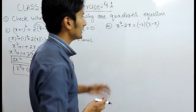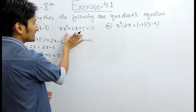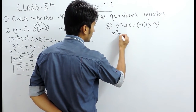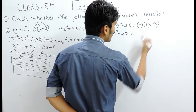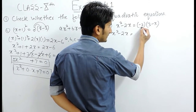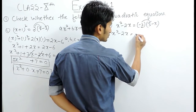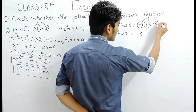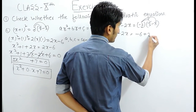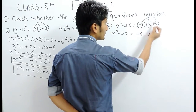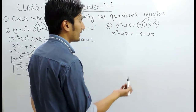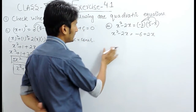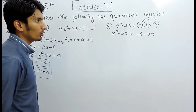Similarly, we solve the second part and check whether it also matches the standard form. This gives x squared minus 2x. When opening the bracket, multiply with both terms: minus 2 multiplied by 3 gives minus 6, and minus 2 multiplied by minus x gives plus 2x, because minus times minus is plus and 2 times x is 2x. Now we shift all terms to this side since we need only 0 on the right hand side.